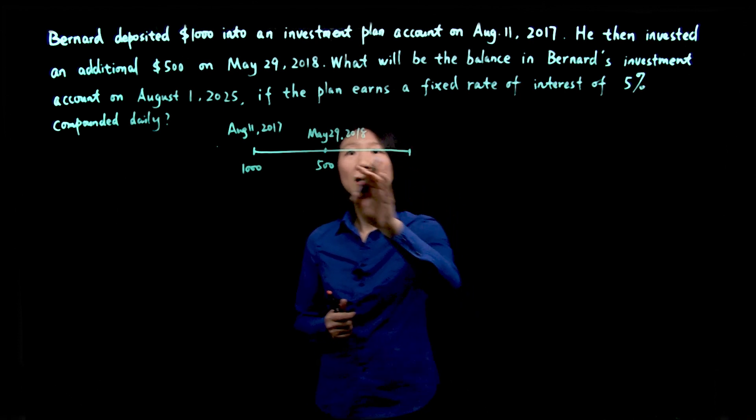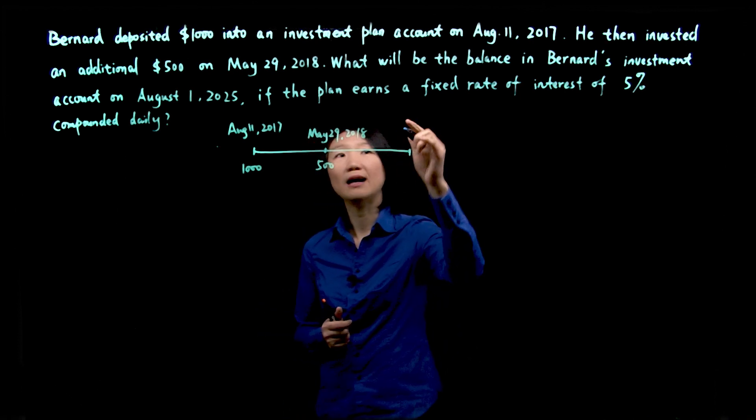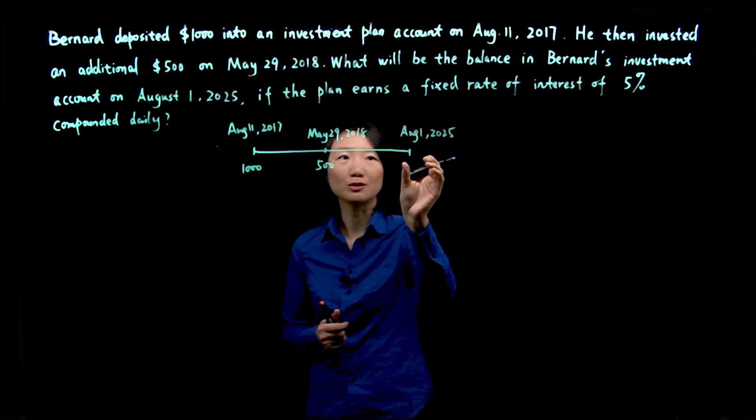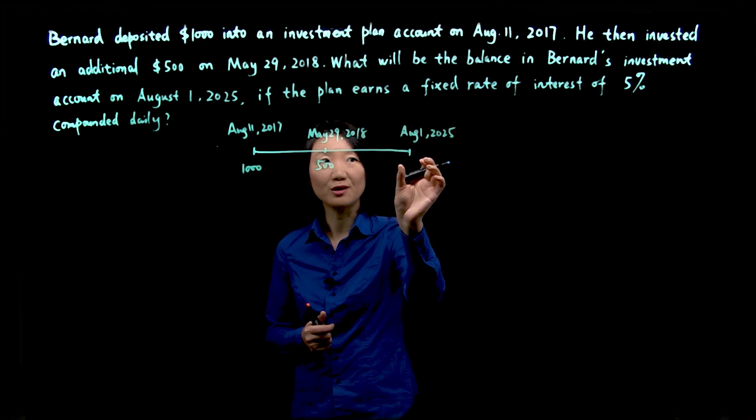We want to know how much money he will have on August 1, 2025. So we want to know the maturity value at that point in time.